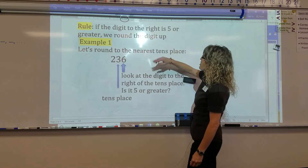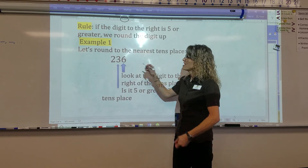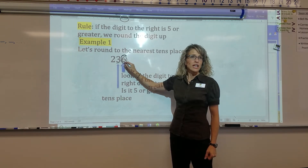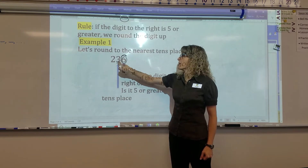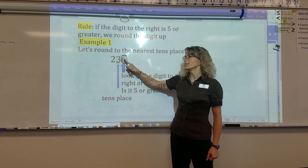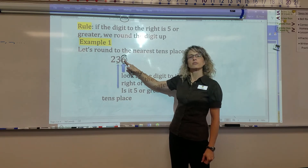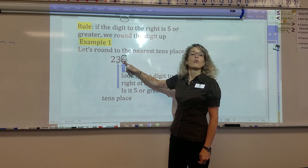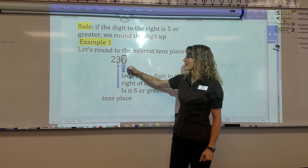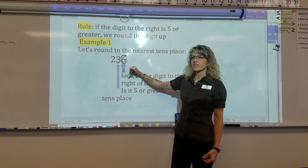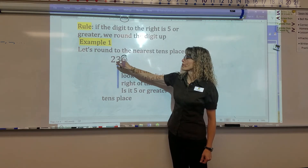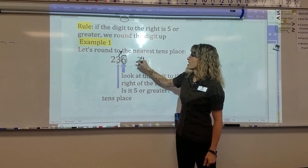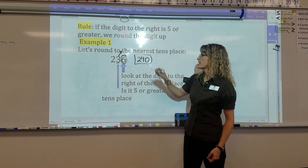If I was rounding 236 to the tens place, the rule is: you examine the tens place, you circle the digit right to the right of it. And you say this cool saying — five or more, make it soar; four or less, let it rest. That means if this number is five or more, this number will soar. In this case, six is more than five, so it's going to soar. So three becomes a four, and all the rest of the digits become a zero, and our rounded number is 240.